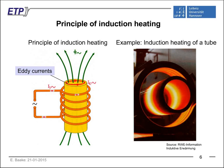A nice example is the induction heating of a tube. From this picture, we can already see a lot of advantages of induction heating. We can see that heat is generated inside the material — inside the tube — due to the eddy currents. We also see that no contact is needed between the primary coil and the workpiece, because energy is transferred by the electromagnetic field. This allows a relative movement between the workpiece and the coil. Heat is mainly generated where the electromagnetic field is concentrated, inside the coil, giving a local heating effect.